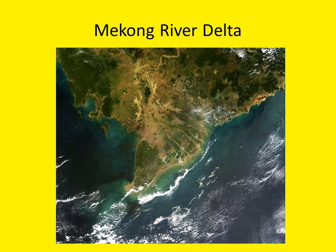I keep getting the Spongebob character Plankton in my head every time I see the word — sorry for that. The Mekong Delta is often called the Rice Bowl of Vietnam. There are approximately 17 million people who live in the Mekong River Delta, across 12 Vietnamese provinces. About 80% of the population in the Mekong Delta are engaged in some form of rice cultivation, and the Delta accounts for approximately one-half of the country's total rice production.